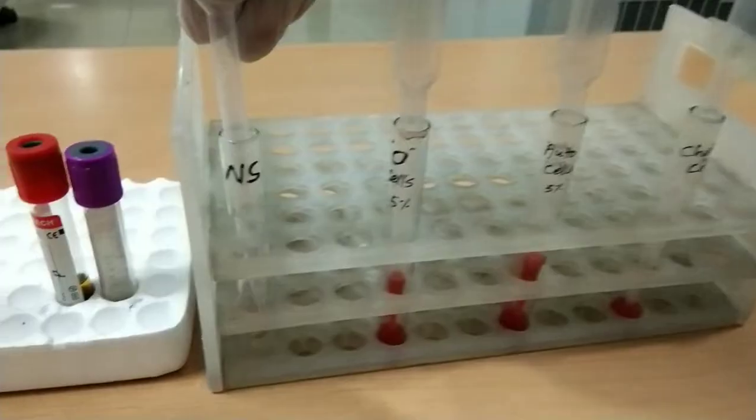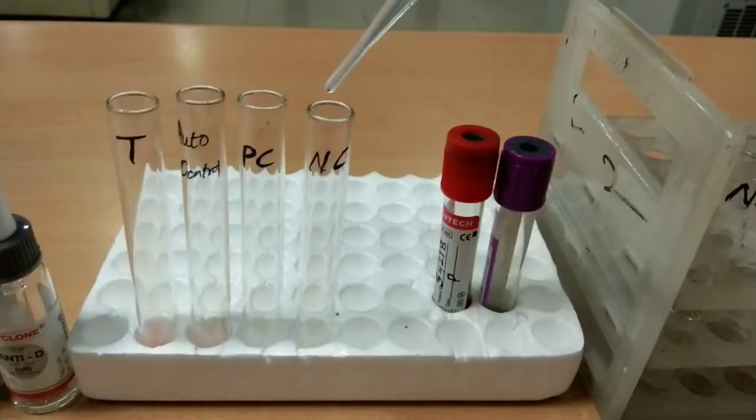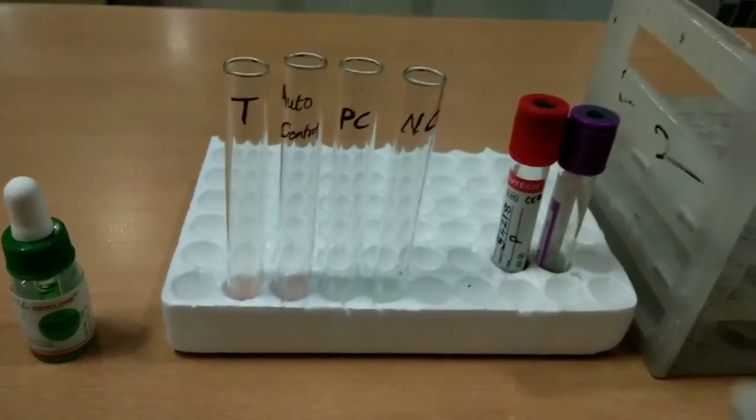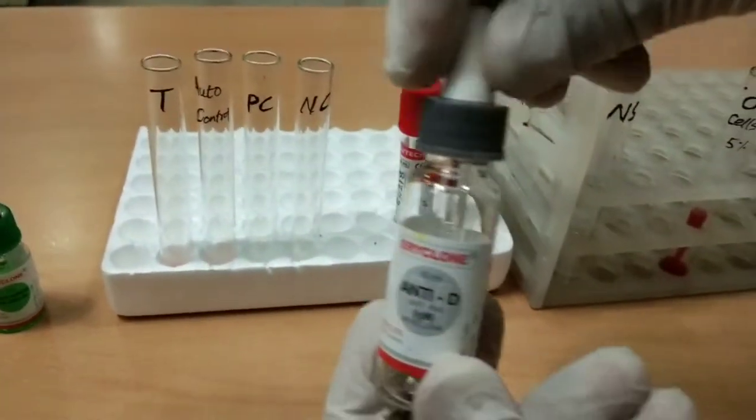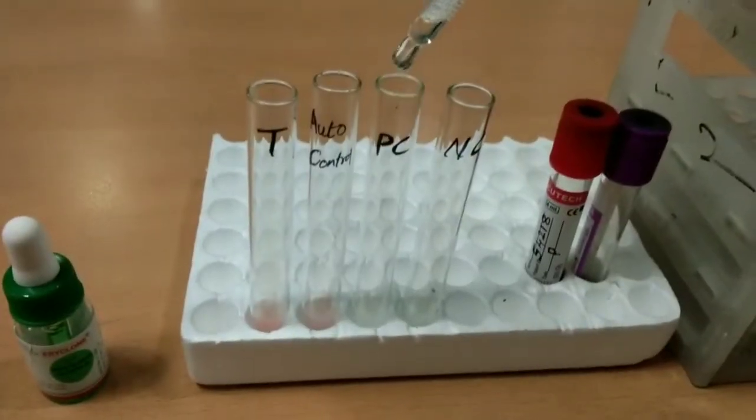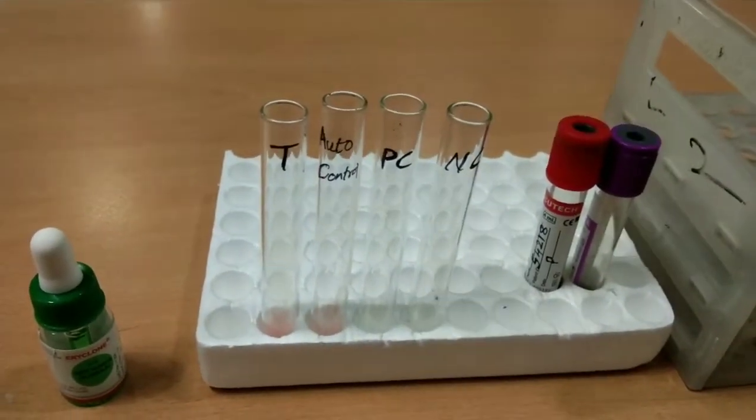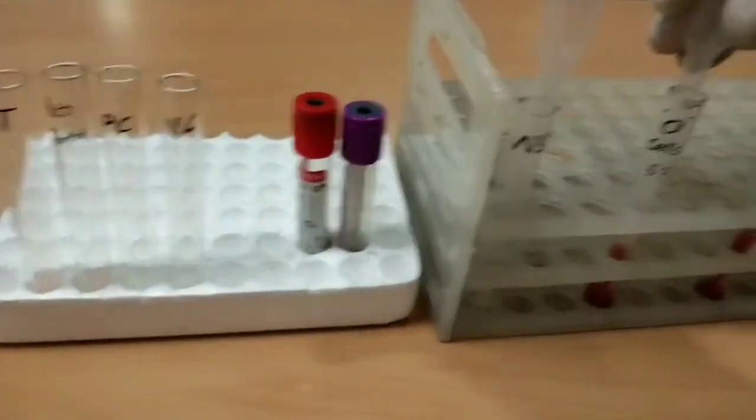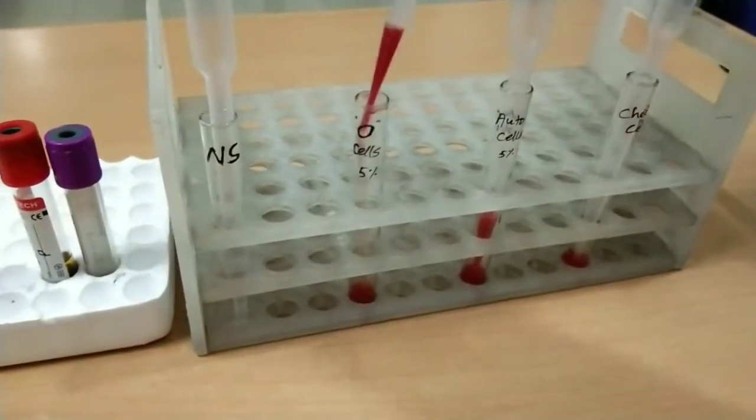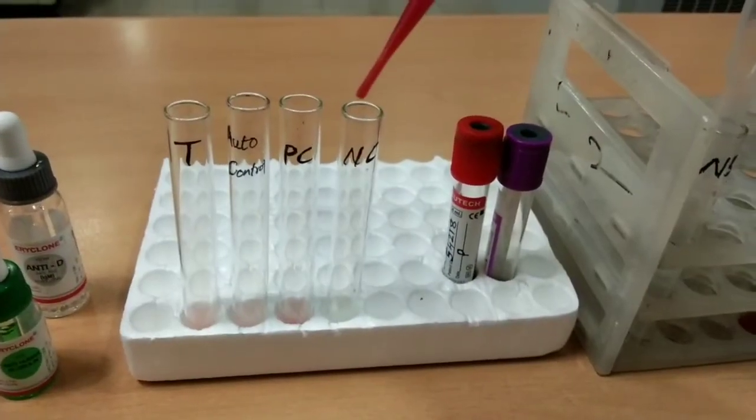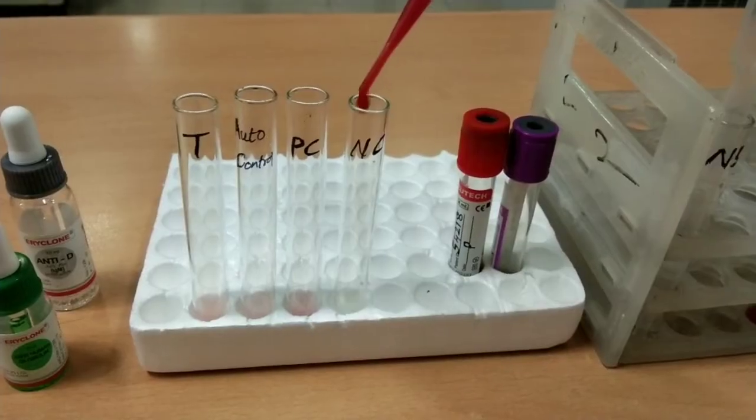Then add two drops of normal saline into the negative control tube and two drops of anti-D antisera into the positive control tube. Add two drops of O-positive cells into the positive control tube and one drop of O-positive cells into the negative control tube.